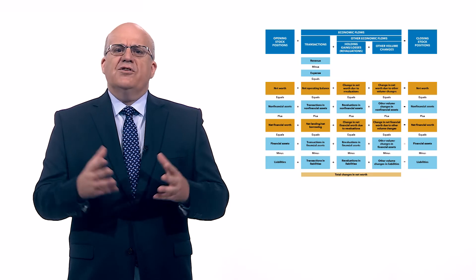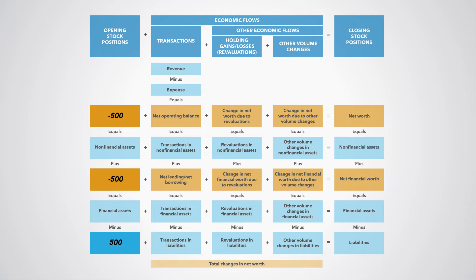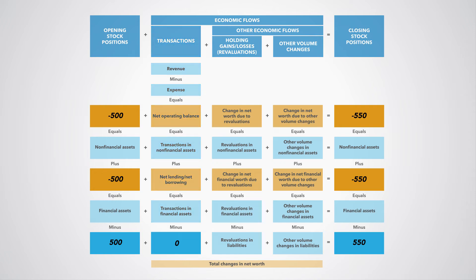Let us assume government owes 500 to a foreign government at the beginning of the year. For simplicity, let us further assume that during the year there were no transactions relating to this loan. However, because of a depreciation in the country's exchange rate, the value of this foreign loan in local currency is 550 at the end of the year. Is this change a transaction or an other economic flow? We can agree that this economic flow is not by mutual agreement, so it cannot be a transaction. In this case, we record a revaluation of liabilities of plus 50.